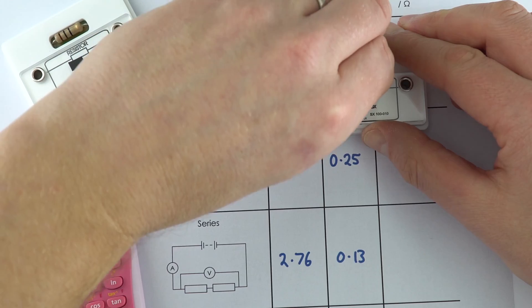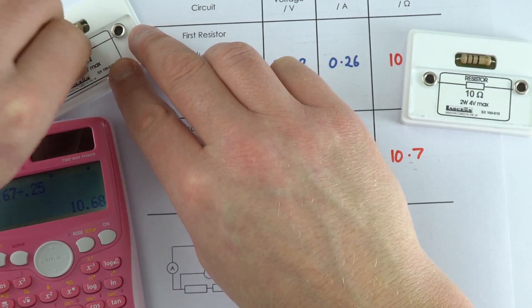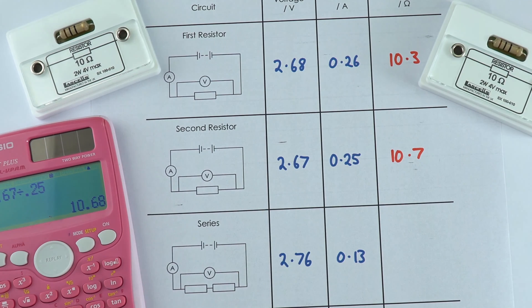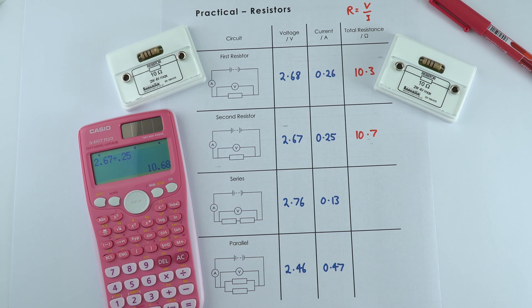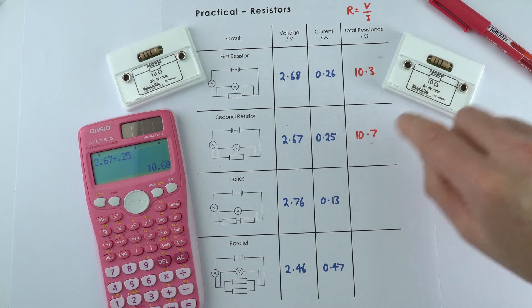If we actually peel off this small bit of tape, we can see that both of these resistors are 10 ohm resistors. So that should mean that whatever the current or potential difference going through them, they should have a fixed resistance of about 10 ohms, which they do.